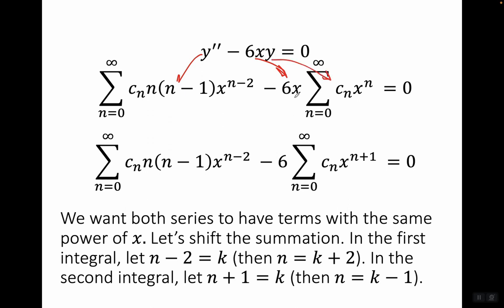When we move the x in, the exponent on the second series becomes x to the n plus one. It's awkward to add these two series together because in the first series the general term involves x to the n minus two, and in the second it involves x to the n plus one. We want those powers to be the same — otherwise it's like adding meters and feet. We want both series to have terms with the same power of x, so let's shift the summation.